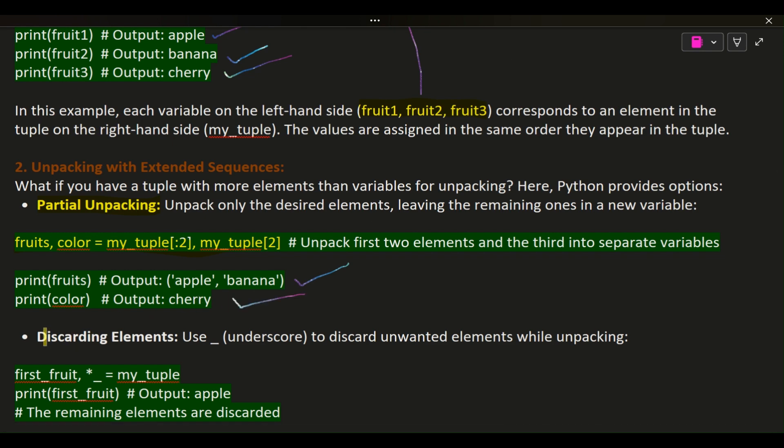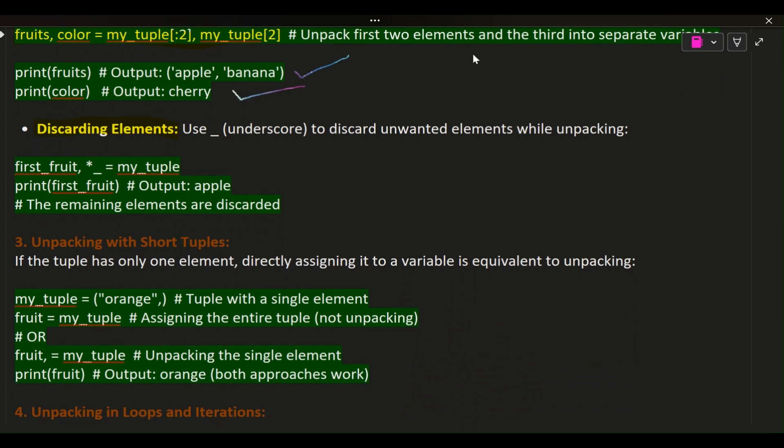Discarding elements: Use __(underscore) to discard unwanted elements while unpacking. first_fruit, *_ = my_tuple. print(first_fruit) # Output: apple # The remaining elements are discarded.